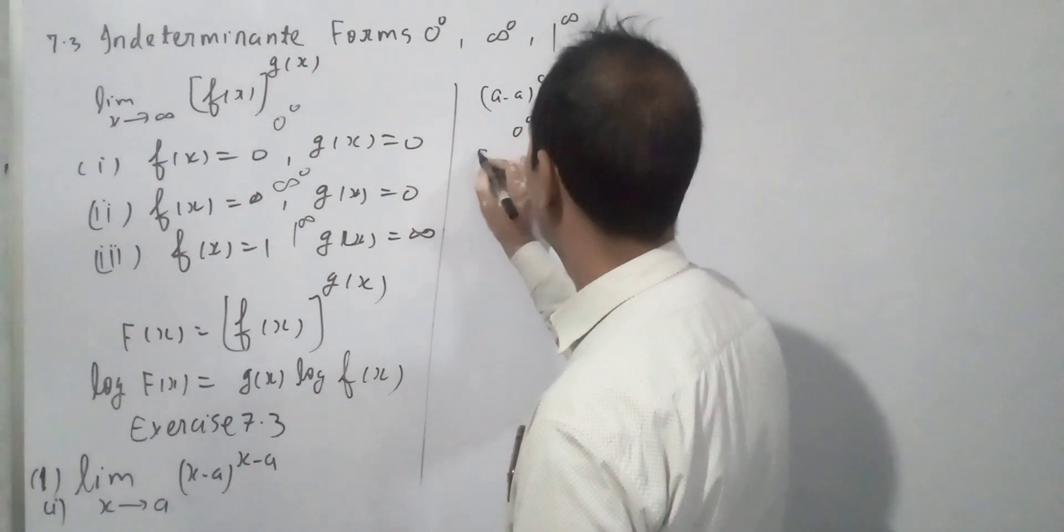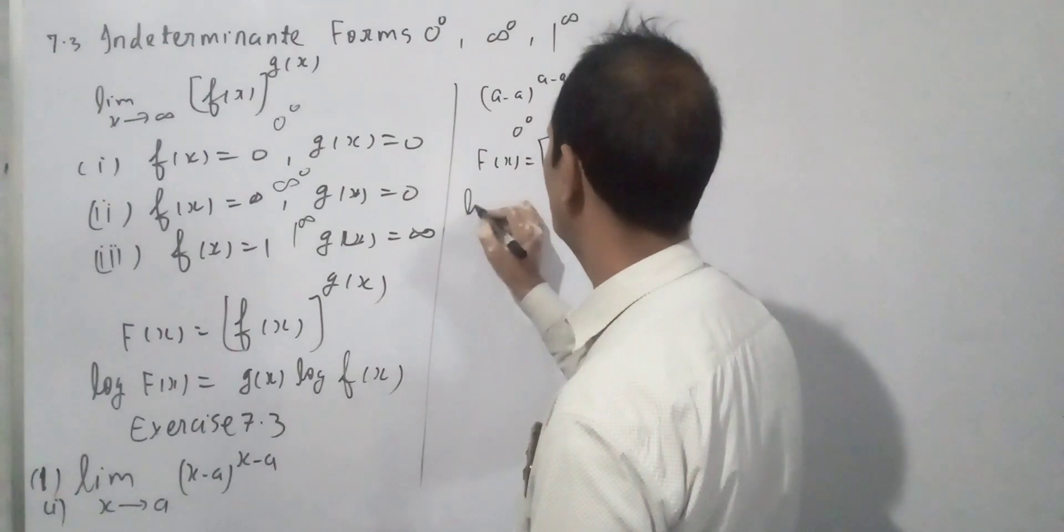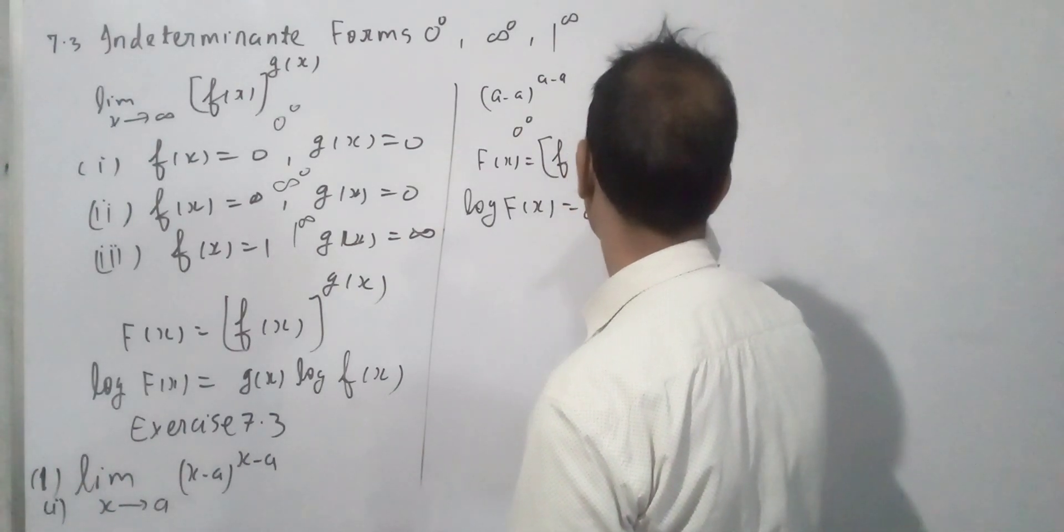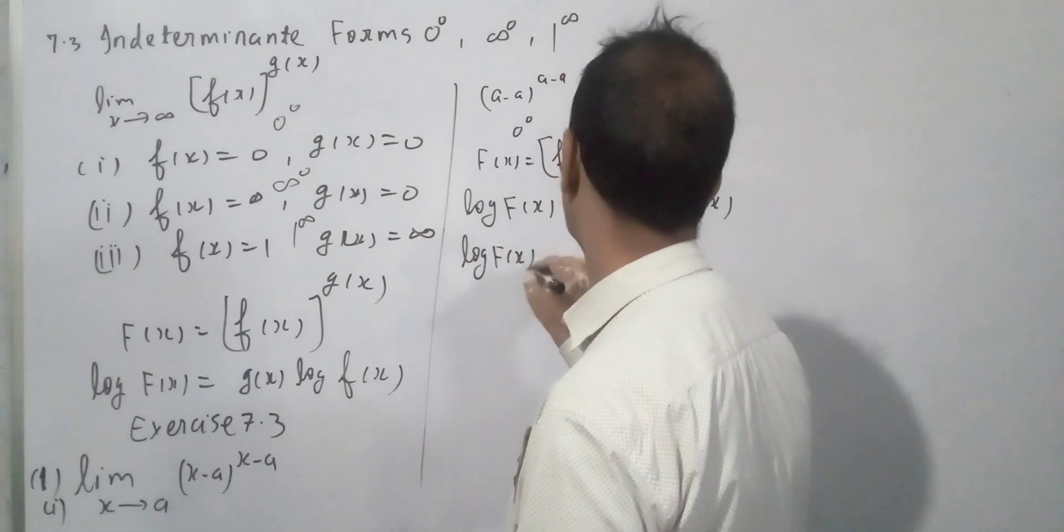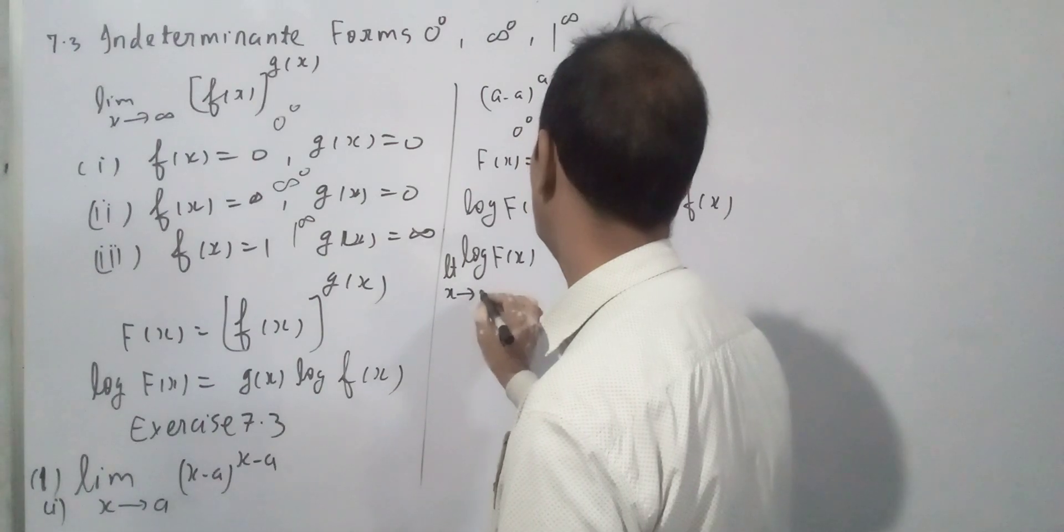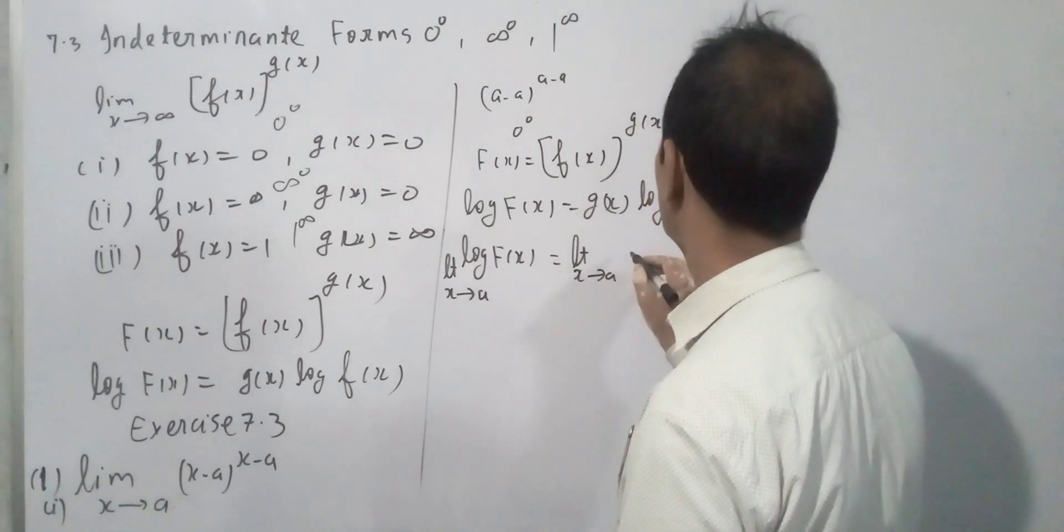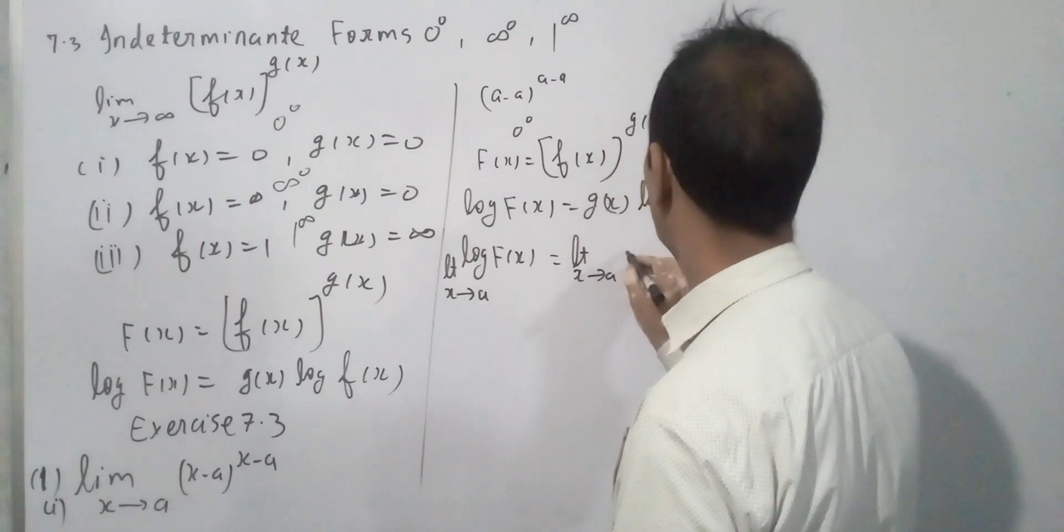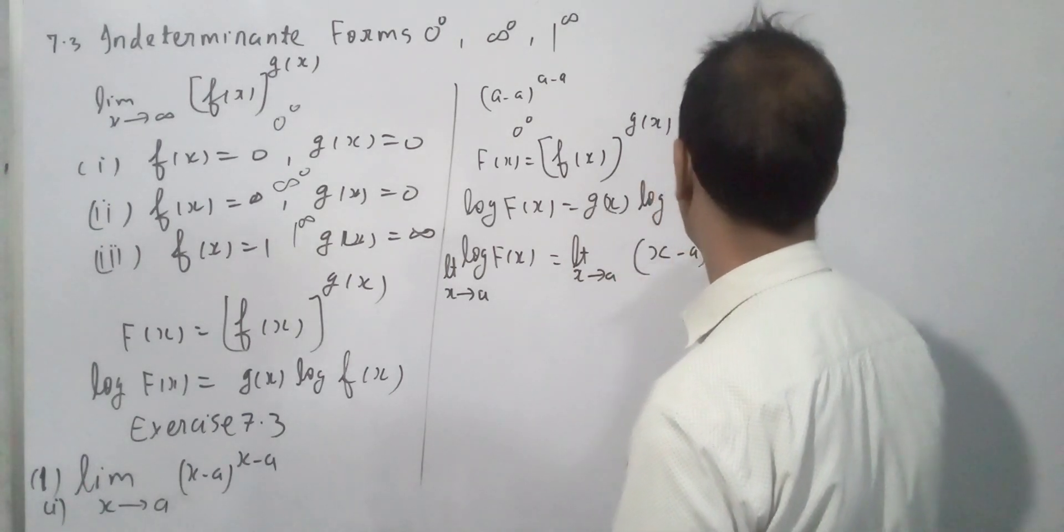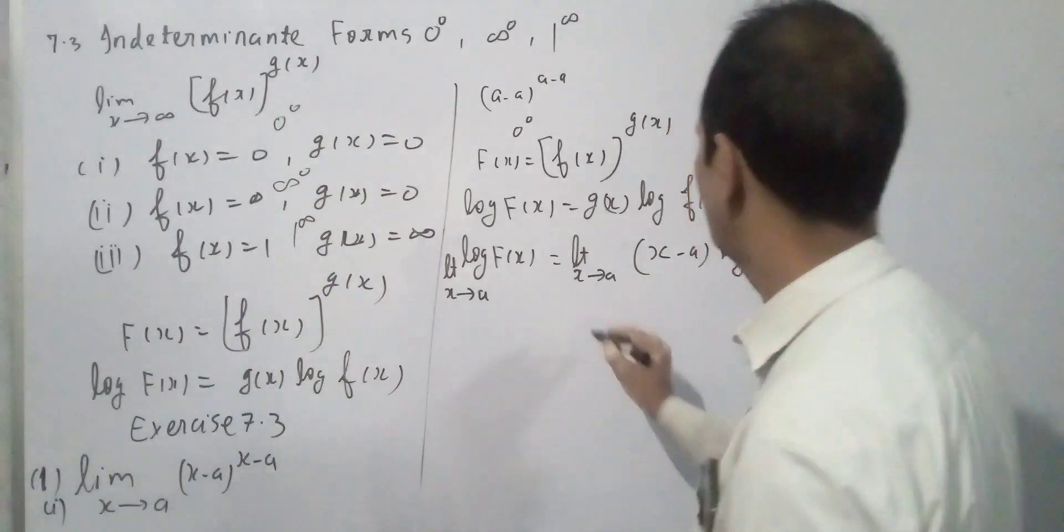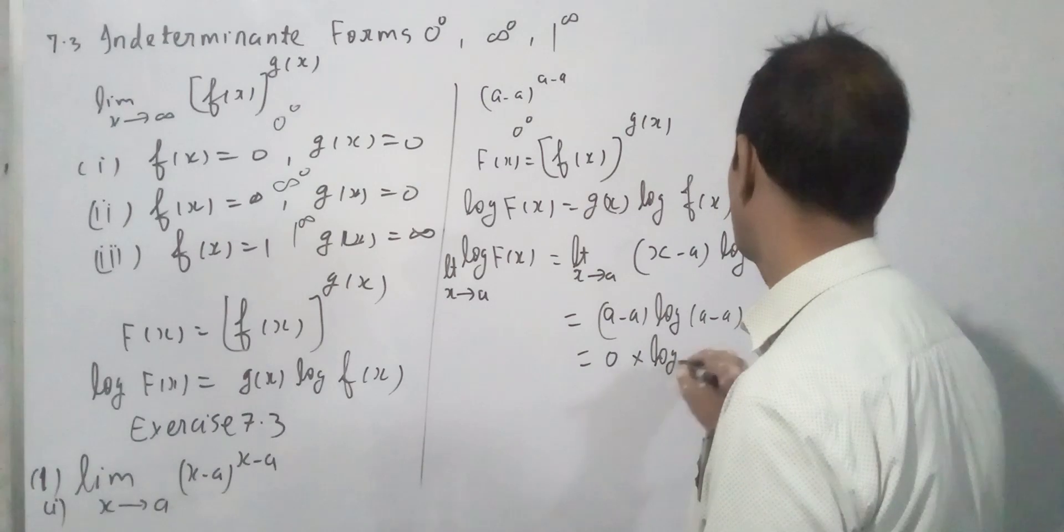Then this power f(x)^g(x) can be written as e^(g(x)log(f(x))). So log F(x) = g(x) log f(x). Limit x tends to a, (x-a) times log(x-a), which becomes (a-a) times log(a-a), then 0 times log 0, then 0 times ∞.